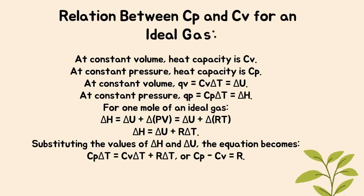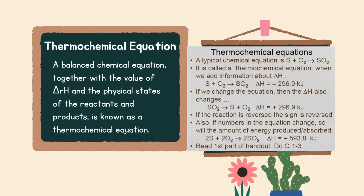Relation between C_P and C_V for an ideal gas: at constant volume, heat capacity is C_V; at constant pressure, heat capacity is C_P. At constant volume, Q_V equals C_V·ΔT equals ΔU. At constant pressure, Q_P equals C_P·ΔT equals ΔH. For one mole of an ideal gas, ΔH equals ΔU plus Δ(PV) equals ΔU plus R·ΔT, giving C_P minus C_V equals R. Thermochemical equation: a balanced chemical equation together with the value of Δ_r H and the physical states of the reactants and products is known as a thermochemical equation.